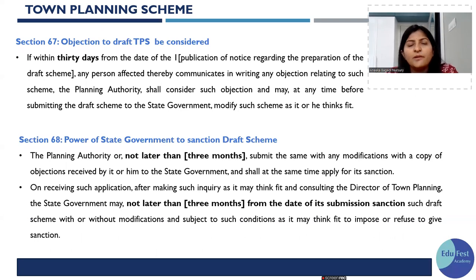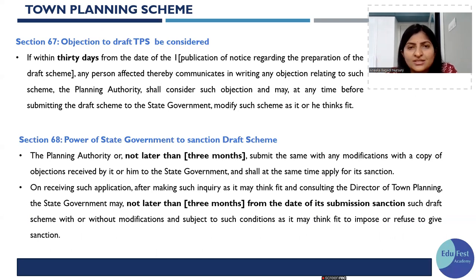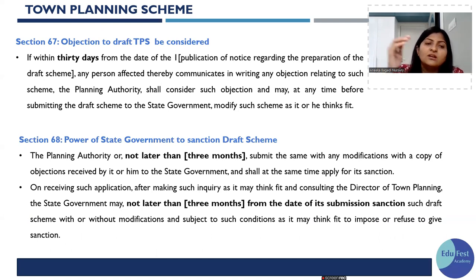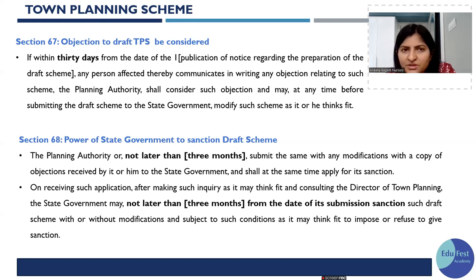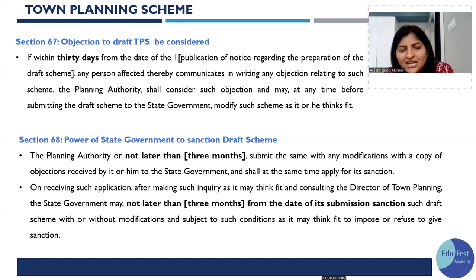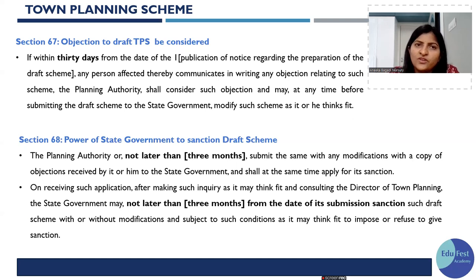After the draft TPS is made, within 30 days we need to invite suggestions and objections from stakeholders. Regarding the power of the state government to sanction the draft TPS: within 3 months of receiving suggestions and objections, the modified draft TPS must be submitted to the state government for sanctioning. The state government must sanction it within 3 months, or they can reject it or suggest modifications.